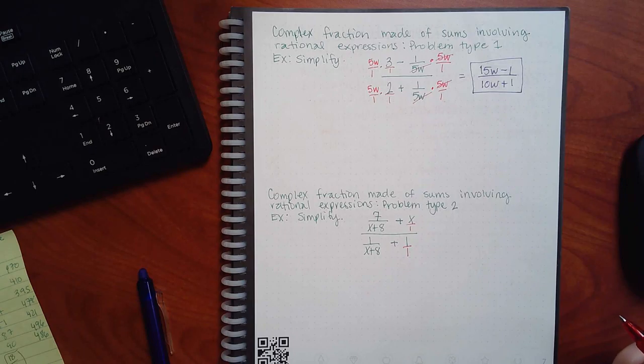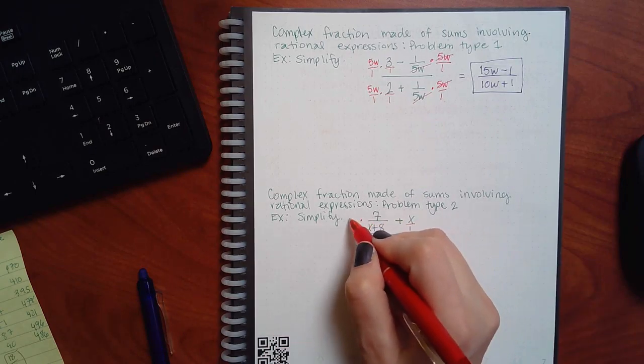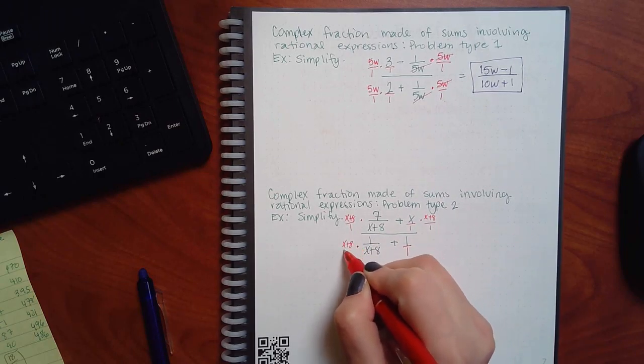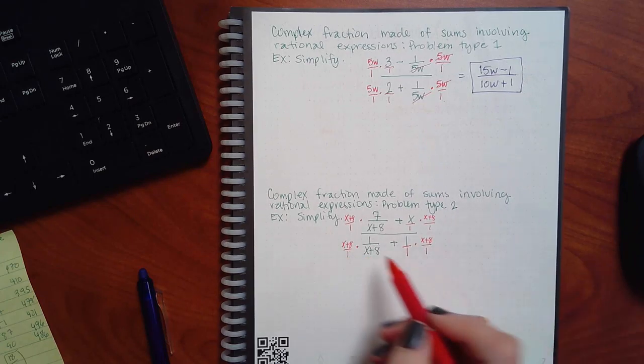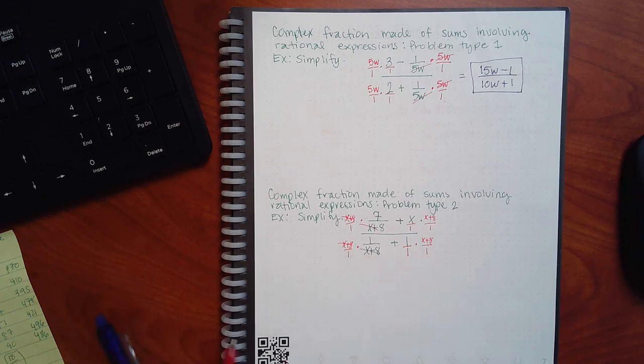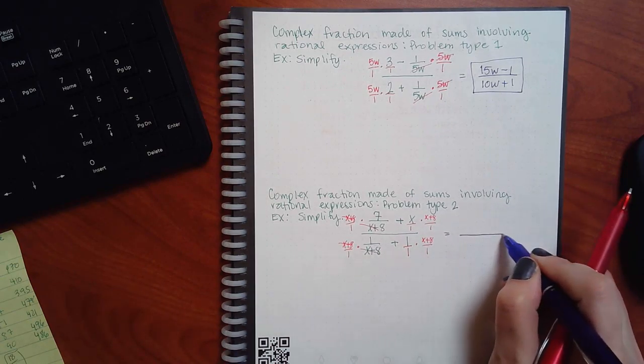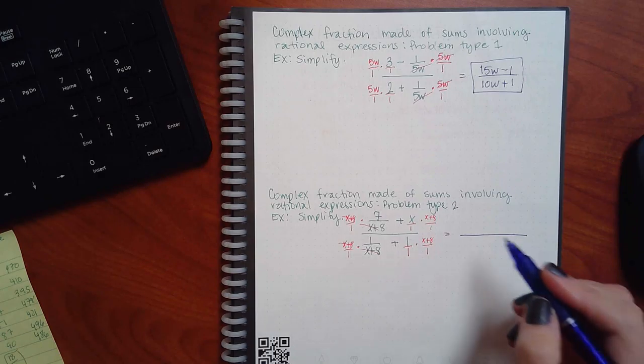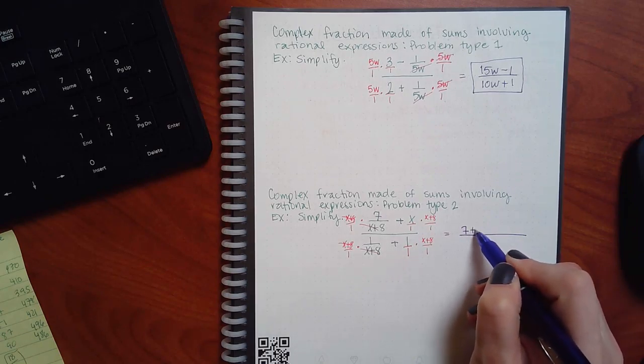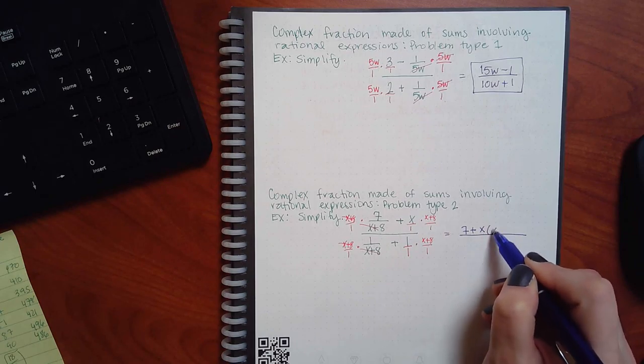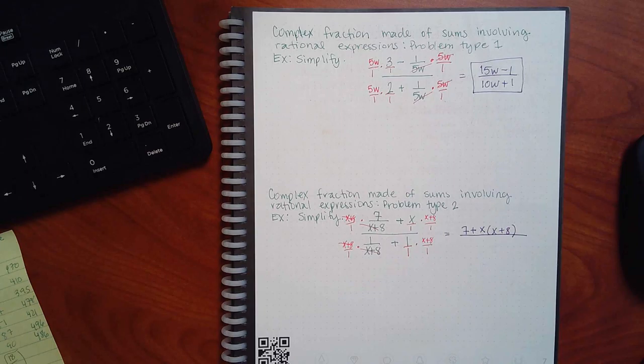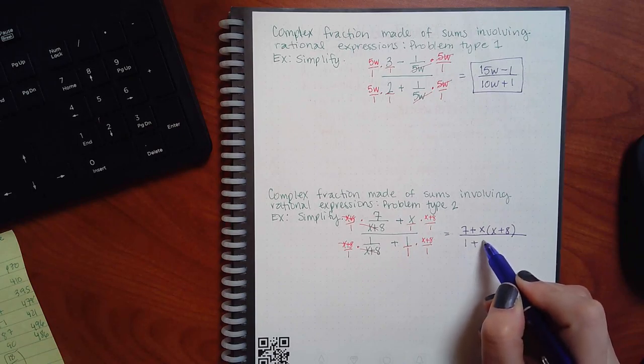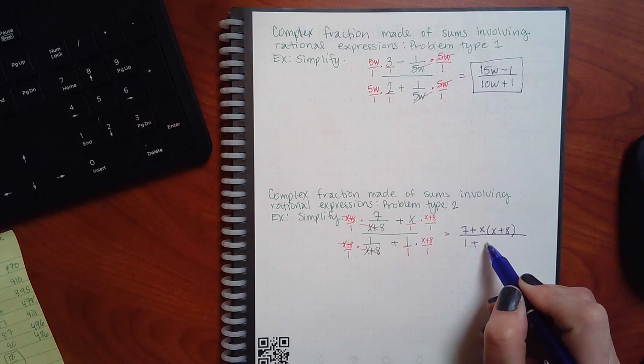What was the common denominator for this one? X plus 8. So, be careful here. What are you left with at the top? You have 7 plus X times X plus 8. And what do you have left at the bottom? At the bottom, you're going to have 1 plus X plus 8. Don't cancel the ones. Just leave them alone. Or you said X plus 8 in parentheses. Yeah, X plus 8 in parentheses. That you can do.